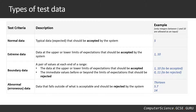For boundary data, we're looking for a pair of values at either end of the spectrum. For a range of one to ten, I'd test one and zero — one should be accepted, zero rejected. The other pair would be ten and eleven — ten should be accepted, eleven should be rejected. As long as you're clear about which values are accepted and which are rejected, the format doesn't matter too much.